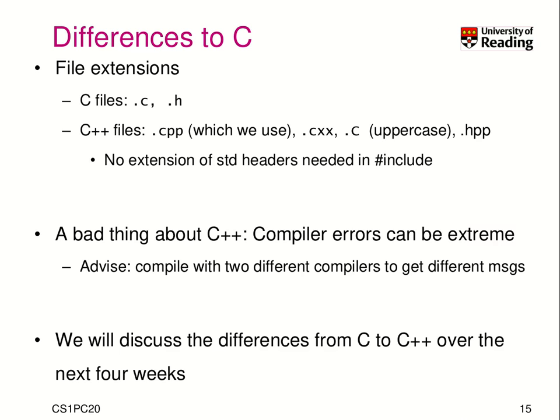Let's get started with some core differences beyond the list. First, the file extension. In C, we had .c and .h for header files. In C++, there are some differences depending on the project. Typically there is .cpp, and there is also .cxx. For header files, you typically have .hpp as a standard. You should use .cpp because that's the most commonly used extension.